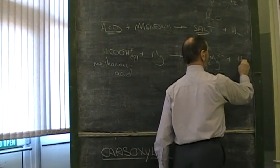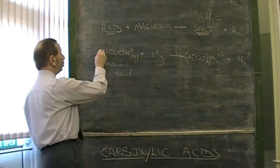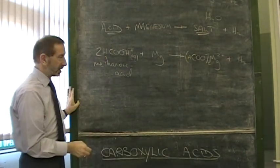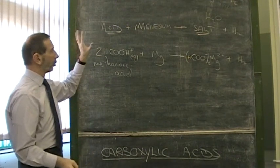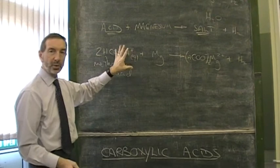Page two. We need to balance this. If we have two methanoates, we must have started with two methanoic acids. The point to remember is these are weak acids. They react rather slowly, but nevertheless, they still do what acids do.